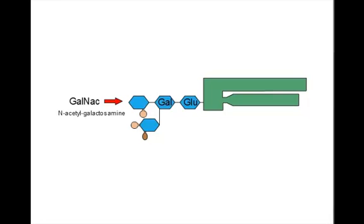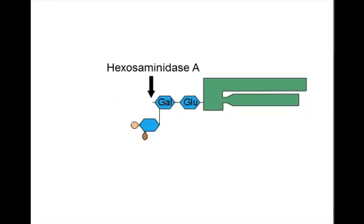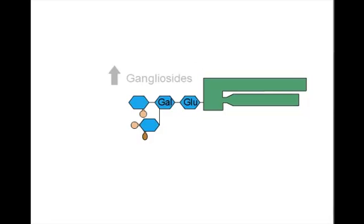Normal degradation of the ganglioside removes the GALNAC molecule by the enzymatic action of hexosaminidase A. When mutations disrupt the normal activity of this enzyme, the GALNAC molecule cannot be removed, and the ganglioside thus cannot be degraded. Massive accumulation of this ganglioside in the lysosomes of brain neurons occurs in Tay-Sachs disease.